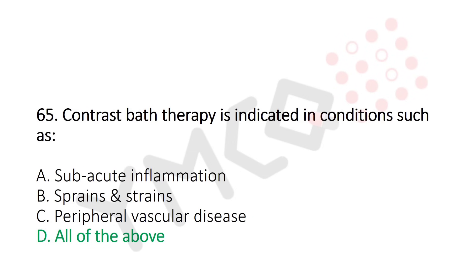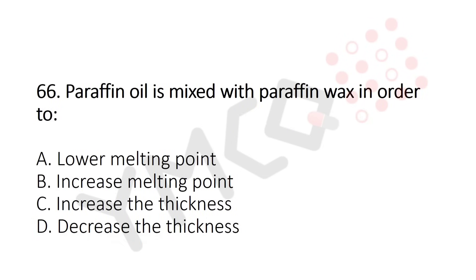Now let's move to question number 66. Paraffin oil is mixed with paraffin wax in order to: Option A, lower melting point. Option B, increase melting point. Option C, increase the thickness. Option D, decrease the thickness. And the answer is Option A, lower melting point.